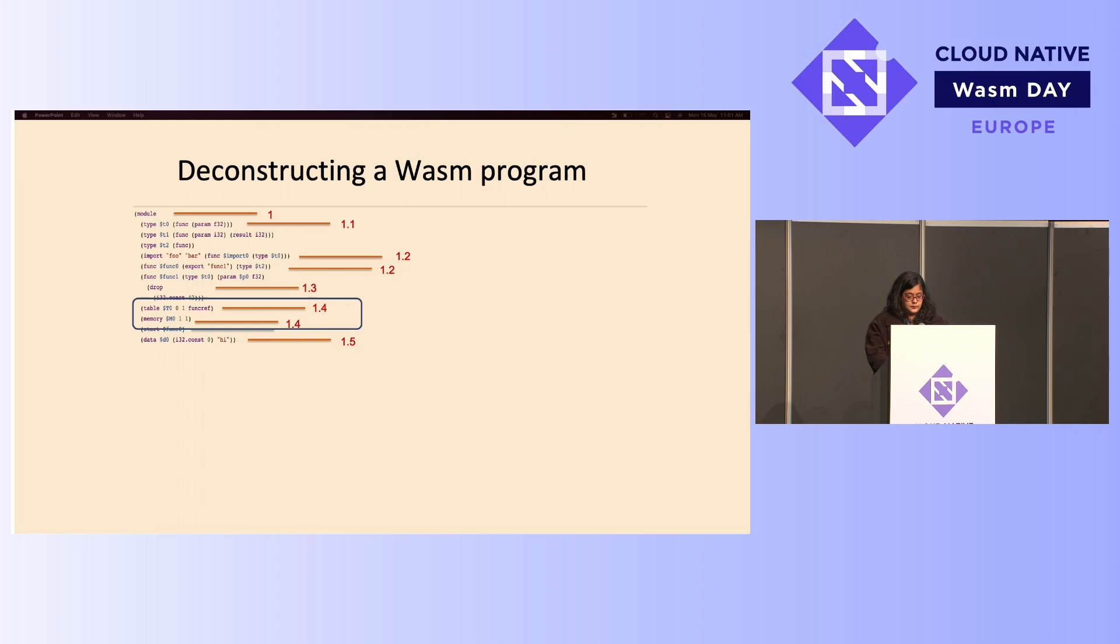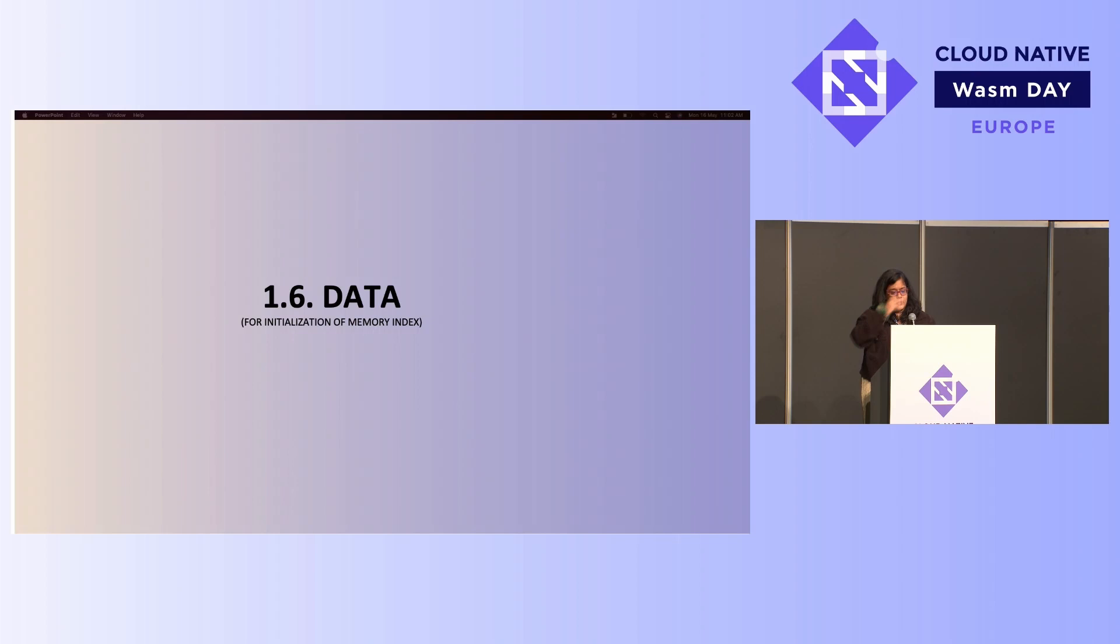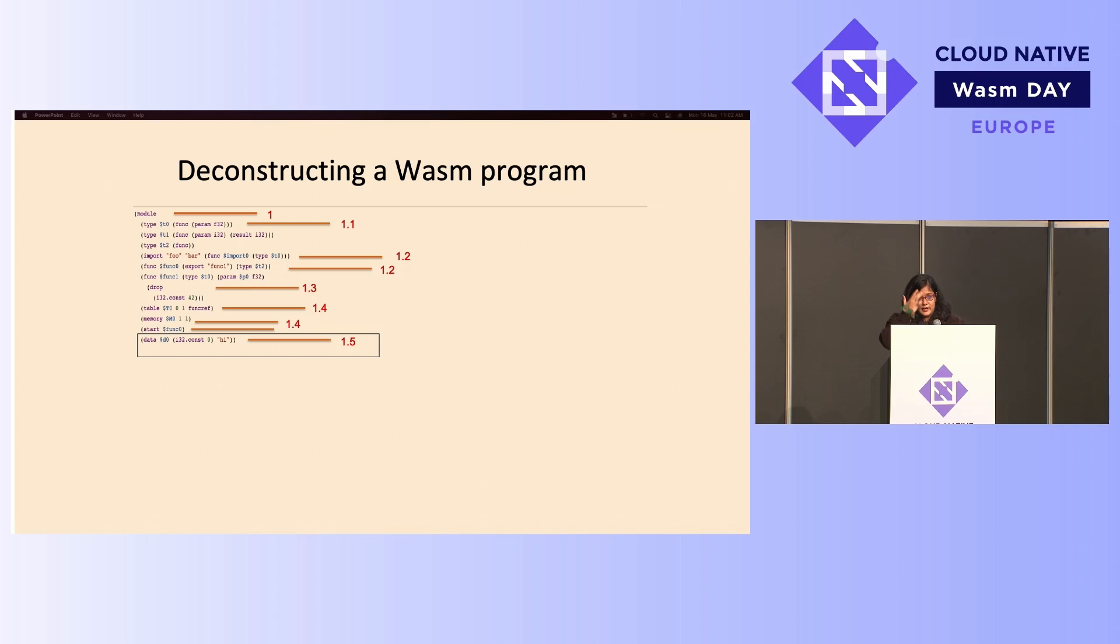And last but not the least, we have data. Now, data doesn't need to necessarily relate to actual initialization or actual requirement for any other functions. But you might need to just pass data for the processing to actually happen. So how does that get declared? This particular section sort of defines that. And the grammatical syntax here is also pretty straightforward, so I don't think I need to go very deep into that.